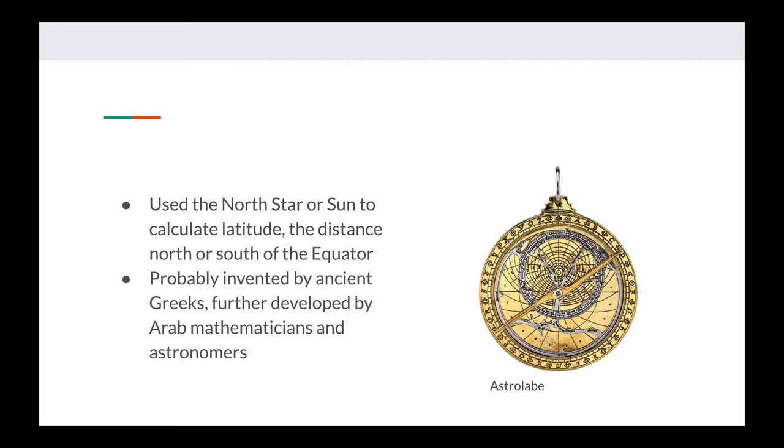The astrolabe was another tool taught in Prince Henry's school of navigation. The astrolabe used the North Star or the sun to calculate latitude — the distance north or south of the equator. It was probably invented by the ancient Greeks and then further developed by Arab mathematicians and astronomers, who took the Greek idea and improved it into a more usable technology.